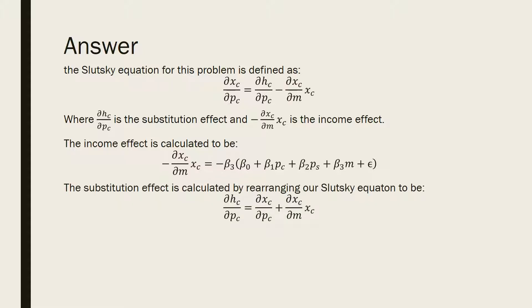And the substitution effect is calculated by rearranging our Slutsky equation to be the following. So it follows that our substitution effect is going to be beta 1 plus beta 3 times that estimated regression equation.